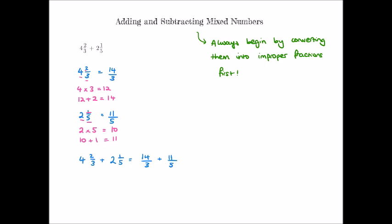Now we add fourteen thirds and eleven fifths using the method from previous examples. The lowest common multiple of three and five is fifteen, so that's our common denominator. To convert fourteen thirds, we multiply numerator and denominator by five to get seventy fifteenths. For eleven fifths, we multiply by three to get thirty-three fifteenths.